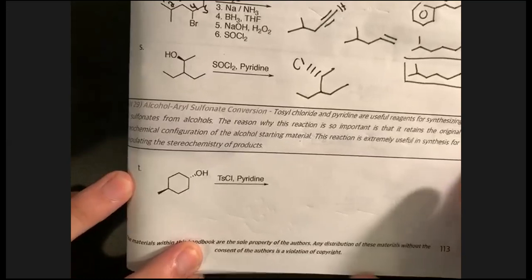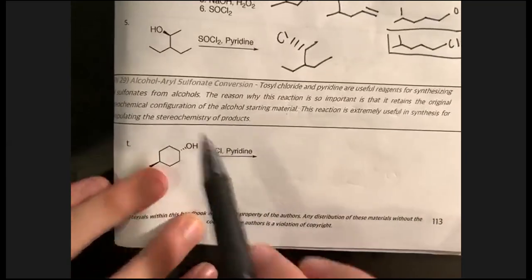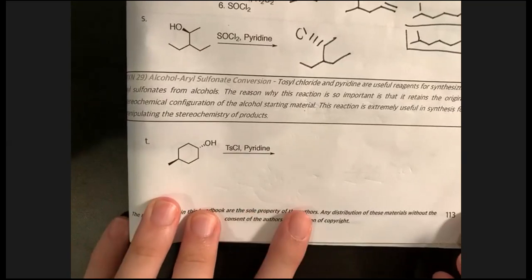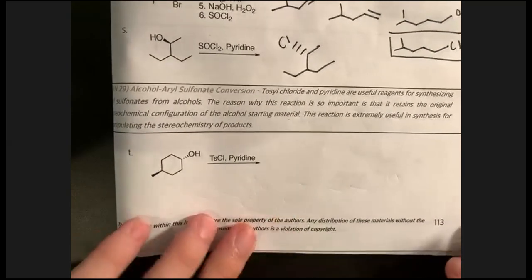Letter S involves inversion of configuration. Phosphorus tribromide and thionyl chloride are very similar — not too bad. Here though, the key sentence is: 'This reaction is extremely useful in synthesis.' Highlight this — you'll probably get a synthesis question involving this step on the exam every year, because of how important it is for manipulating stereochemistry. Think about whether you need an aerosulfonate conversion when doing synthesis.